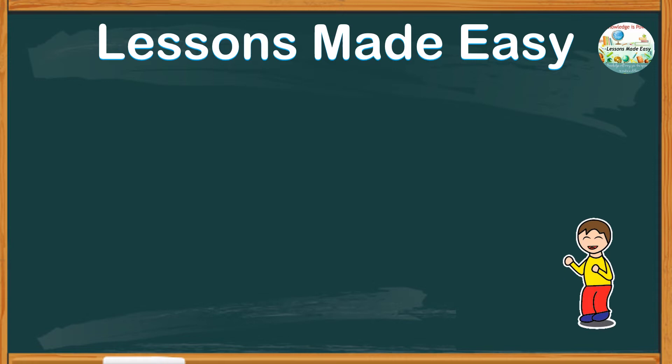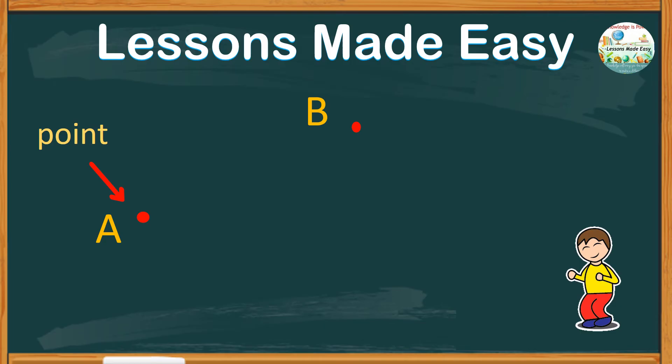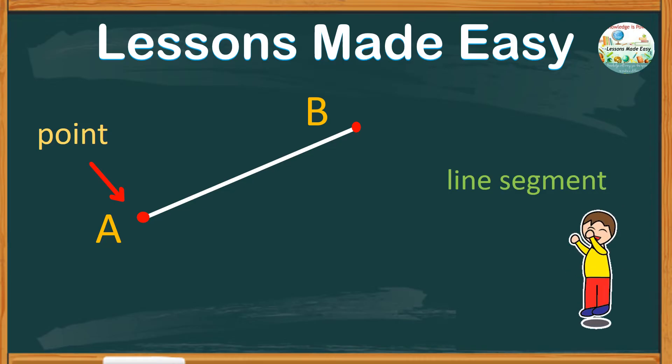Before anything else, it is essential that we know some basic geometrical figures related to angles, such as points. Let's name this point A. Let's have another point, and we'll name it point B. If we connect point A and point B, we'll have what we call a line segment.